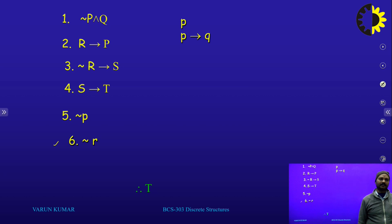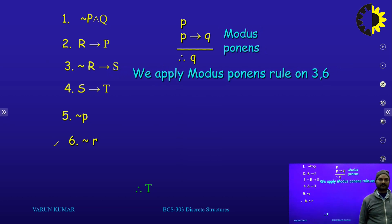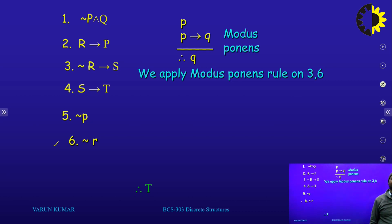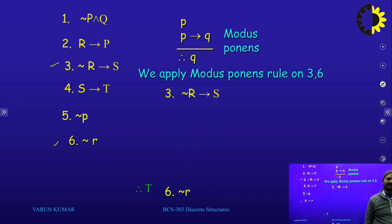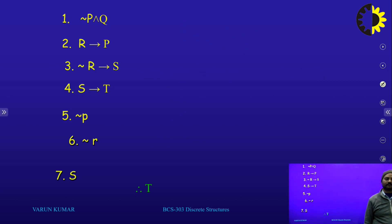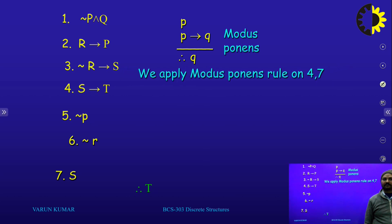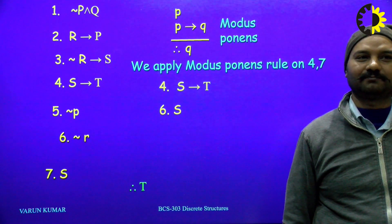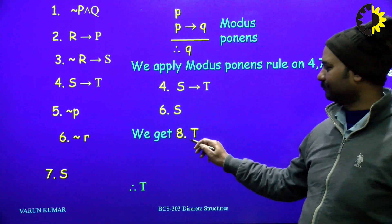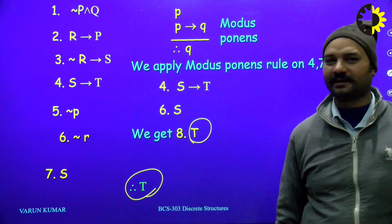By Modus Ponens — if P is true and P implication Q is true, then Q is also true — we apply Modus Ponens on statements 3 and 6: negation of R tends to S, and negation of R, so the result is S. Then we apply Modus Ponens on statements 4 and 7: S tends to T and S, result becomes T. We reach T, meaning our conclusion is valid.